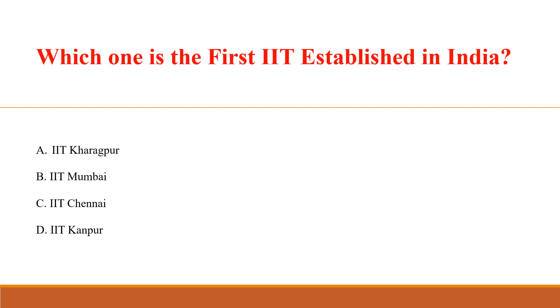Which one is the first IIT established in India? Answer A: IIT Kharagpur, established in 1951 at Kharagpur, West Bengal.